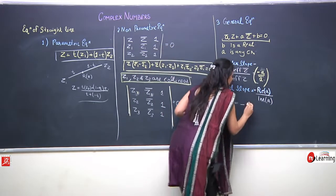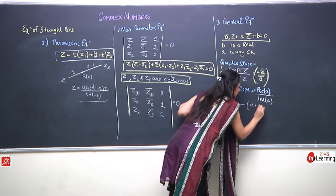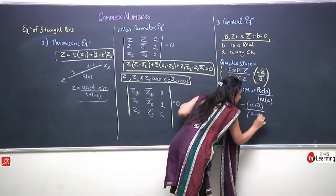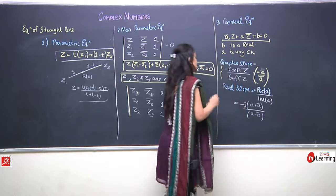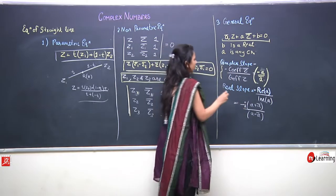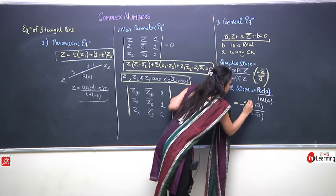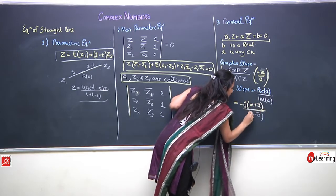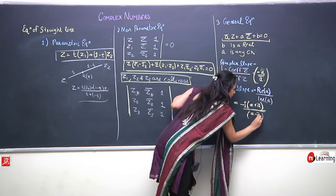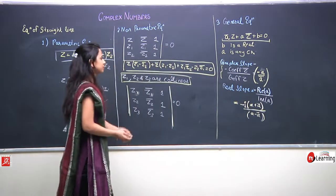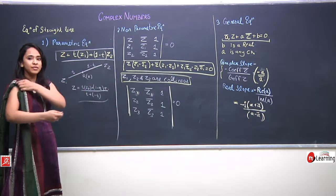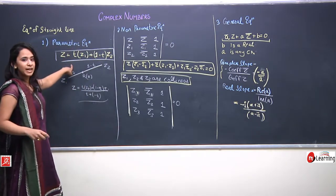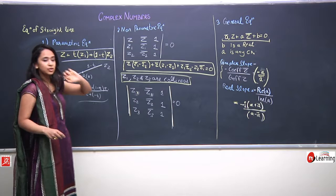We know that Re(a) can be expressed as (a + ā)/2 and Im(a) as (a - ā)/2i. So we have defined the equation of a straight line in three forms. The first is the parametric form: z = t·z1 + (1-t)·z2.